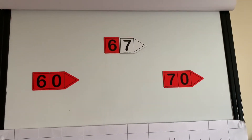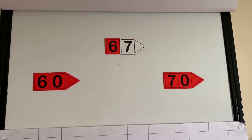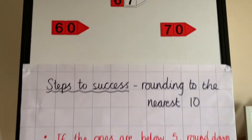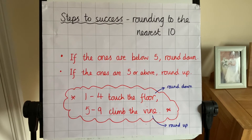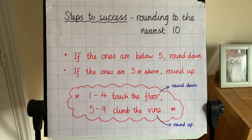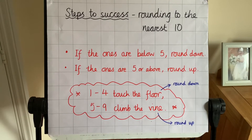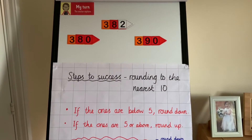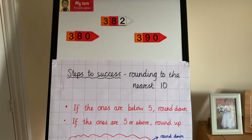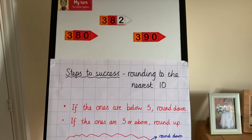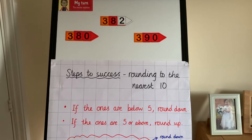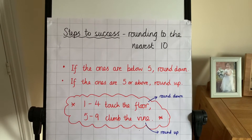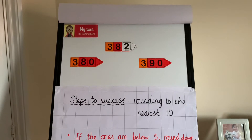Let's look at the number 67. It lies between the two tens, 60 and 70. We need our steps to success to decide whether we round up or down. It ends in a seven — seven comes between five and nine, so we've got to climb the vine. So 67 rounds to 70. Let's have a look at 382. This one lies between 380 and 390. The ones end in a two — two comes between one and four, touch the floor — so I'm rounding down. 382 rounds to 380.